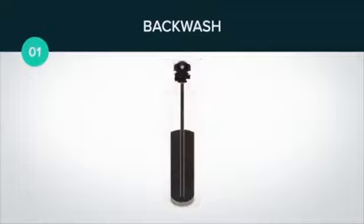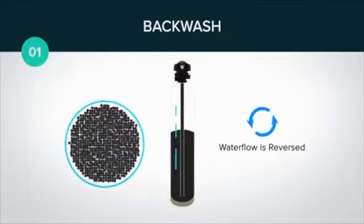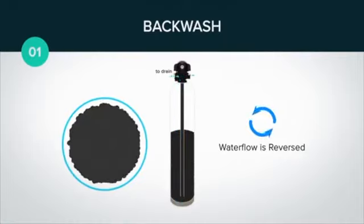Step one is backwash. This loosens or expands the resin. In this state, water flow is reversed and diverted down the distributor tube. The water is then forced up through the resin bed. As the water pushes up through the bed, the resin expands and the plate distributor creates a swirling action.